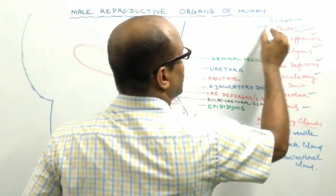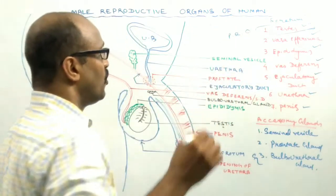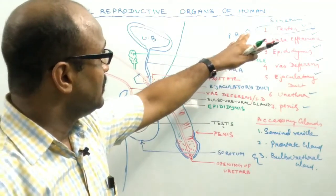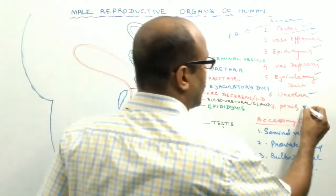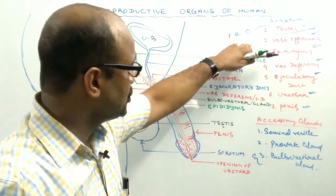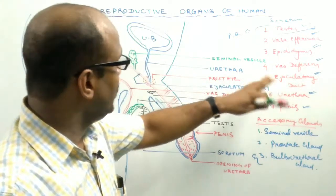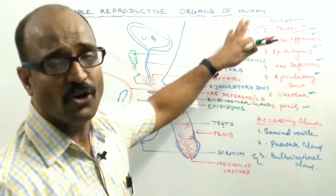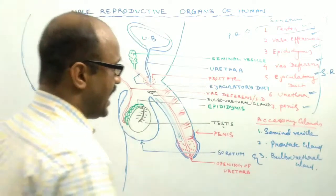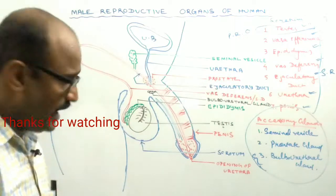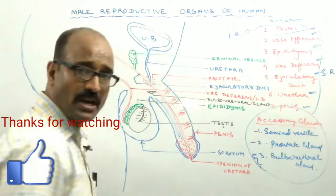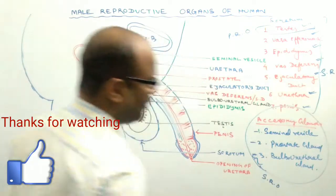Only the testis is the primary reproductive organ because the testis secretes testosterone hormones and forms the sperm or gametes. Other organs are not involved in the process of formation of gametes or the secretion of testosterone hormones. That's why these organs only help for the reproduction process and are known as secondary reproductive organs. The accessory glands — the seminal vesicle, prostate gland, and bulbo-urethral gland — also help the process of reproduction and are likewise known as secondary reproductive organs.